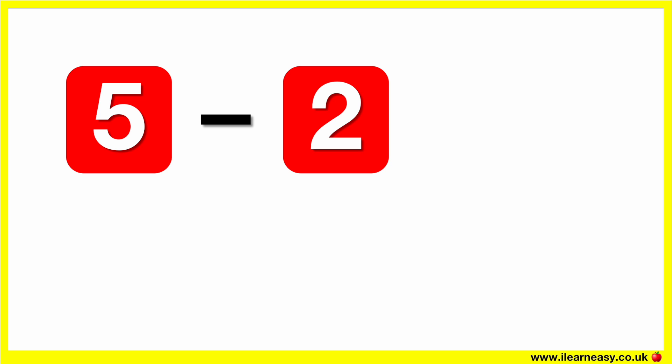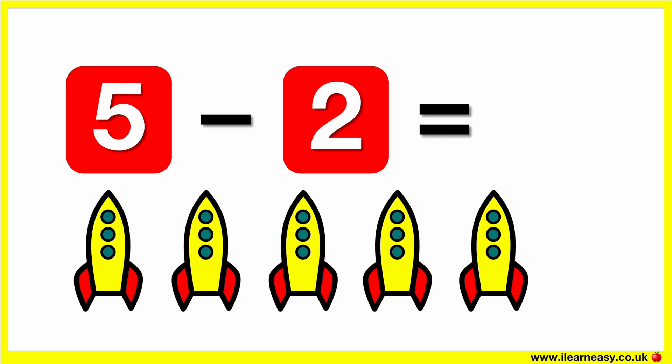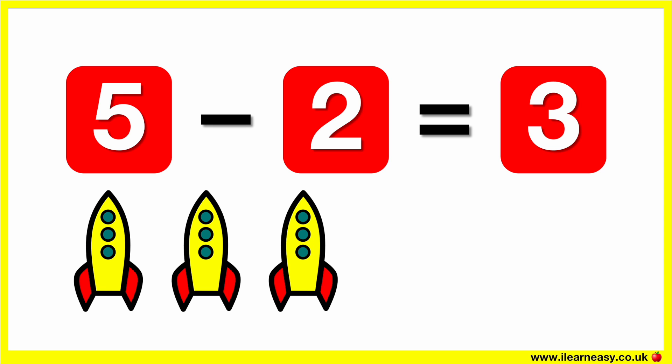Five minus two equals. Here are five rockets. Let's take away two rockets. Now there are three rockets. So, five minus two equals three.